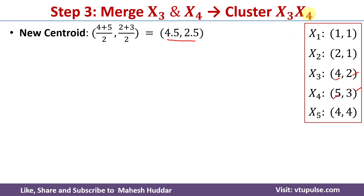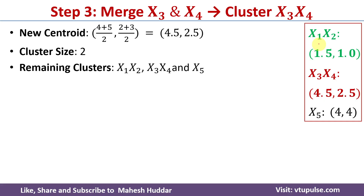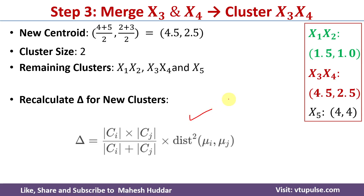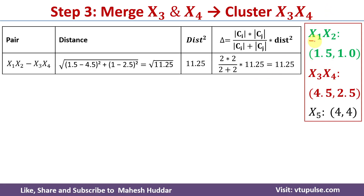This new cluster contains two data points so the cluster size is 2. The remaining clusters are {x1,x2}, {x3,x4}, and x5. We recalculate merging costs with pairings: {x1,x2}-{x3,x4}, {x1,x2}-x5, and {x3,x4}-x5. For {x1,x2} with {x3,x4}, the Euclidean distance is square root of 11.25 and distance squared is 11.25. With cardinality of Ci equal to 2 and cardinality of Cj equal to 2, the merging cost is 11.25.